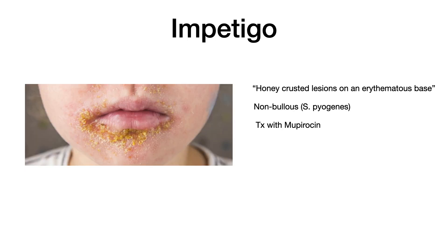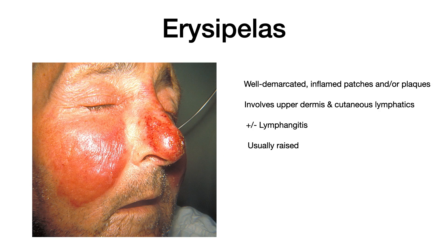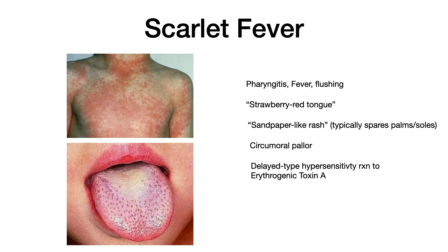Impetigo: the high-yield buzzword is honey-crusted lesions on an erythematous base. If you see that, select Strep pyogenes and treat with mupirocin. Note: Strep pyogenes causes the non-bullous type; bullous impetigo is a different pathogen. Erysipelas is a well-demarcated, raised, inflamed patch or plaque involving the cutaneous lymphatics and uppermost dermis — as seen in the image of a person's face with a crisp line between the red inflamed area and normal skin.